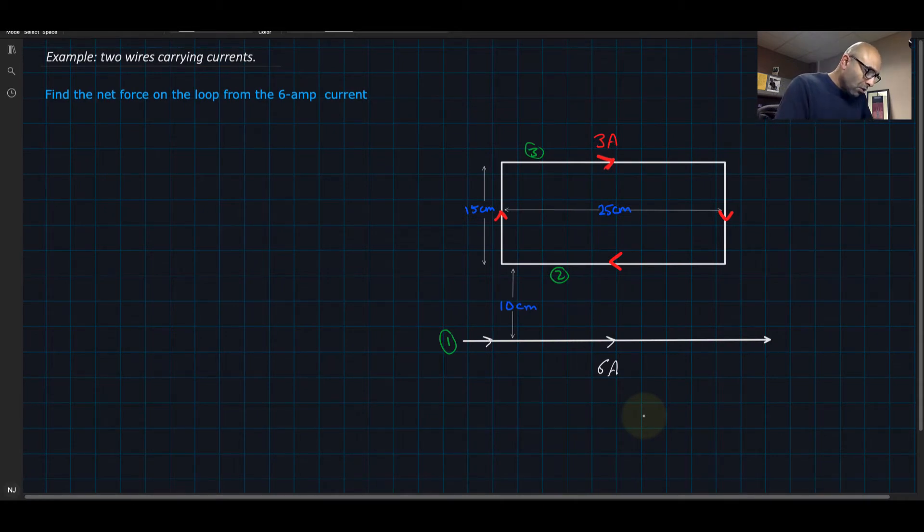To find the force on this part of the loop, I'm going to call it F1 on 2, which equals I1 I2 L2 multiplied by mu naught and divided by 2 pi r, where r is the distance between this current and this current. Now we just plug in the numbers and find the value of this first.